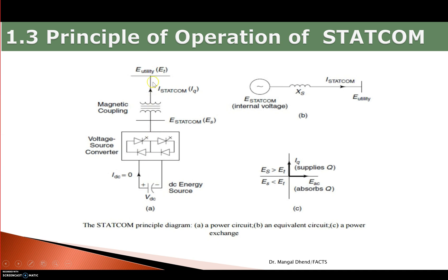This is a single line equivalent diagram of the STATCOM, where this part represents the voltage source converter type. We have seen there are two types of static shunt compensation: based on variable reactance — TCR and TSC — and the second type based on the voltage source converter. STATCOM is based on the voltage source converter type, so it must have a converter.